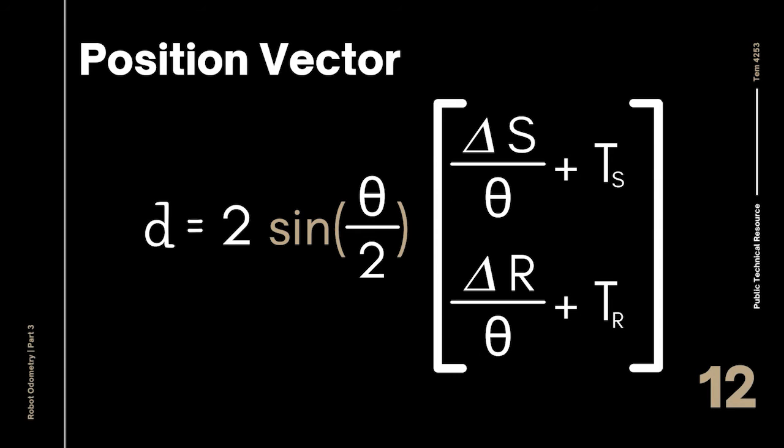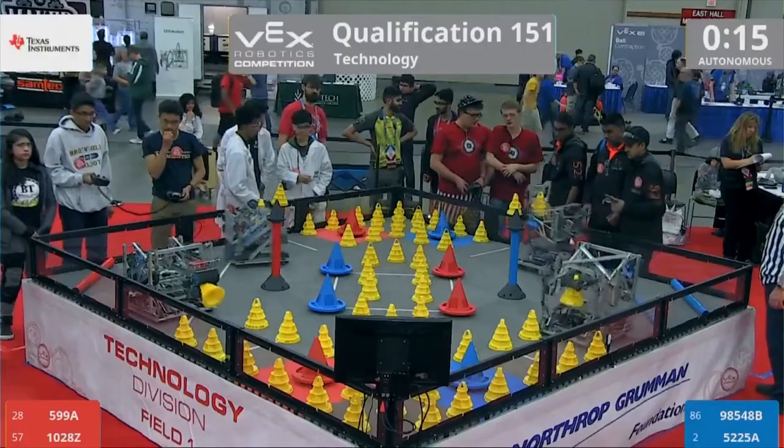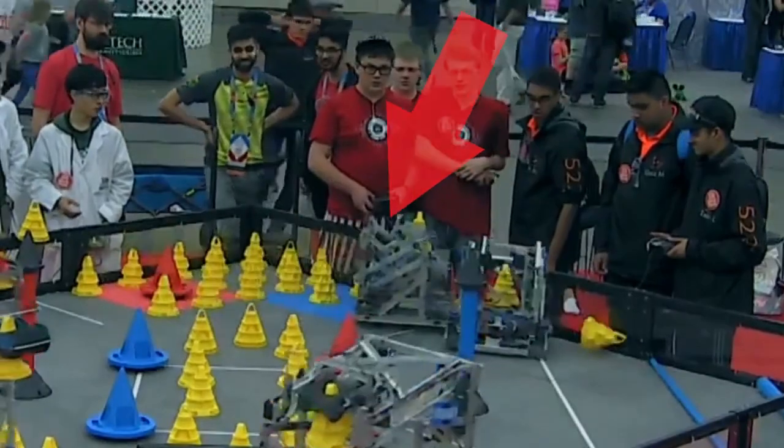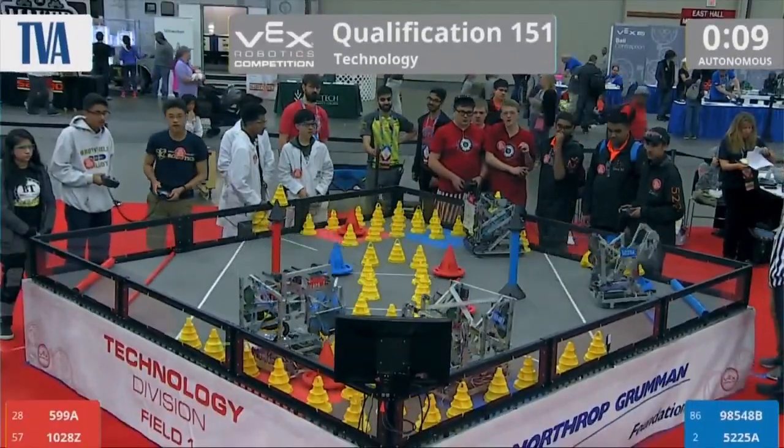Thus, to sum things up, the position vector of the robot can be written as 2 sine of theta over 2 multiplied by delta S over theta plus tS for the x-coordinate and multiplied by delta R over theta plus tR for the y-coordinate. So there you have it! If you just know how far each tracking wheel has moved, you can find the position of the robot anywhere on the field since the current position of the robot at any time is simply the starting position plus the summation of all the position vectors up to that time. Instead of calculating the robot's relative position based on previous positions, we can calculate it as an absolute quantity regardless of what movements the robot has done before. And because of this, we can adjust for past errors and correct for future movements.